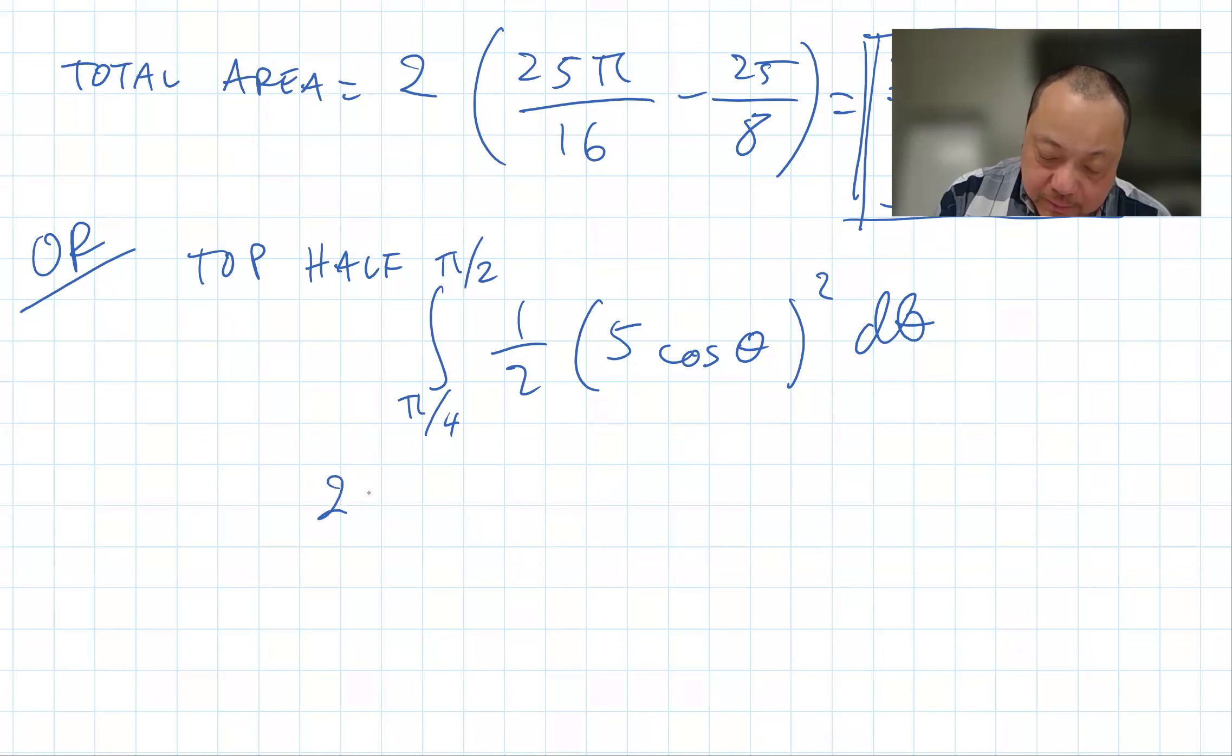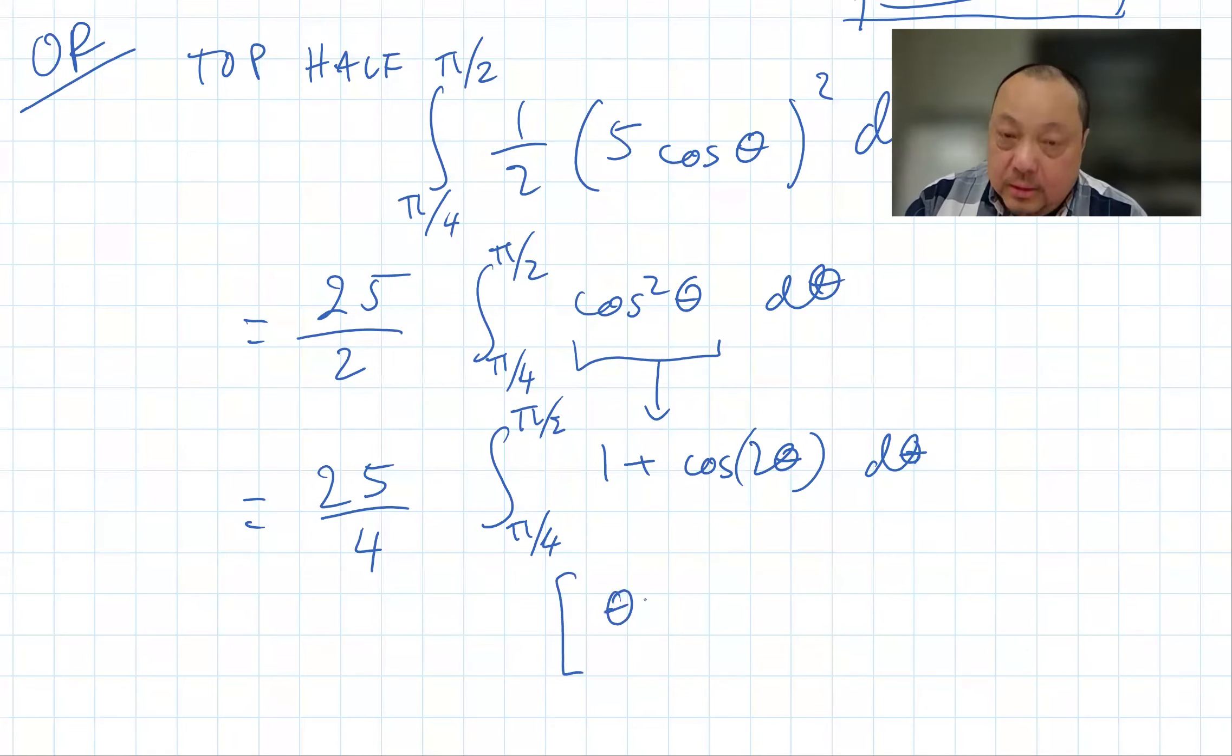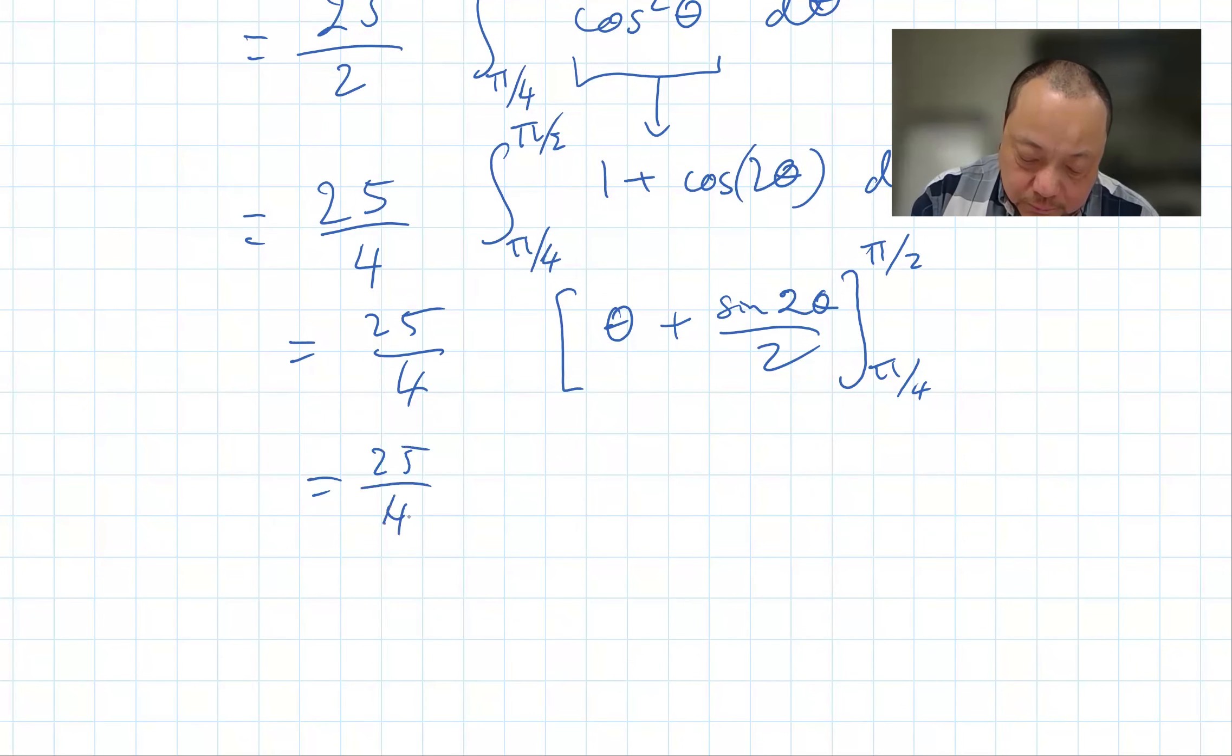And this whole thing works out similarly. This is 1 plus cosine 2 theta over 2. And then I can bring that 2 to the outside and make this over 4. And that leaves me with this integral. The antiderivative is theta plus sine 2 theta over 2.